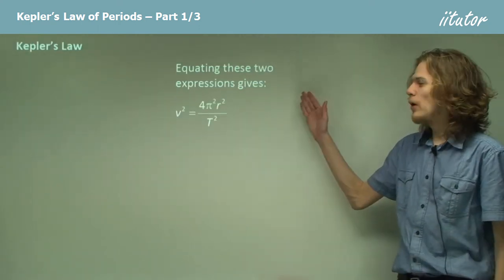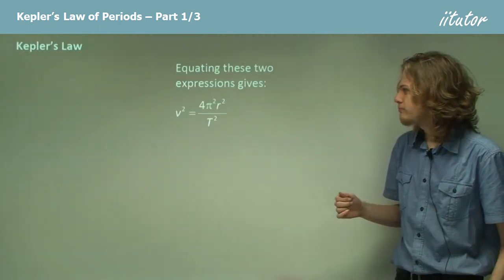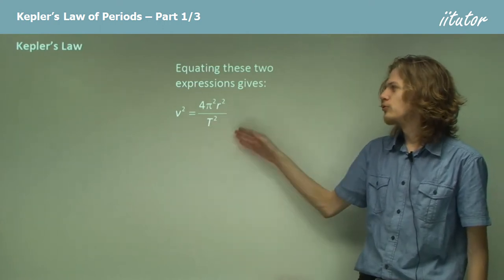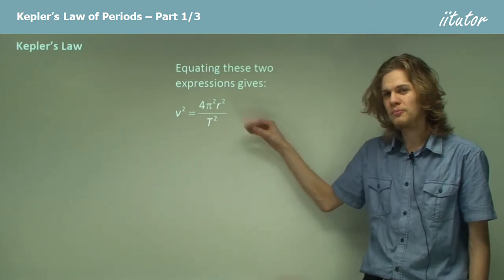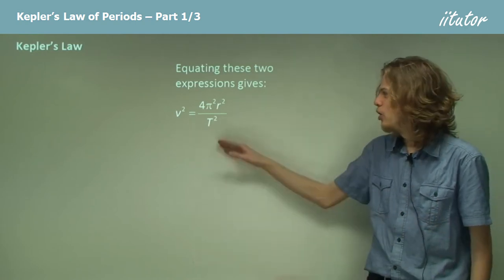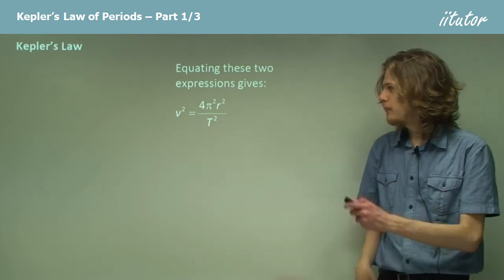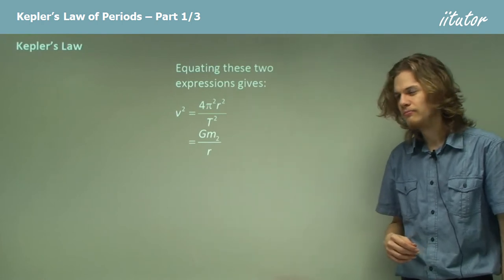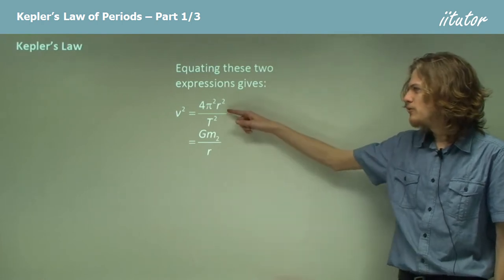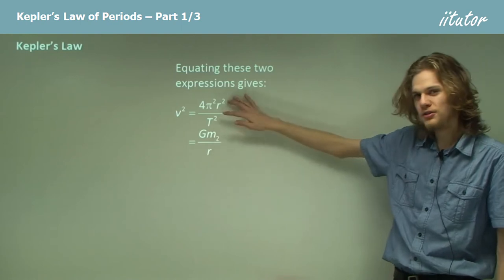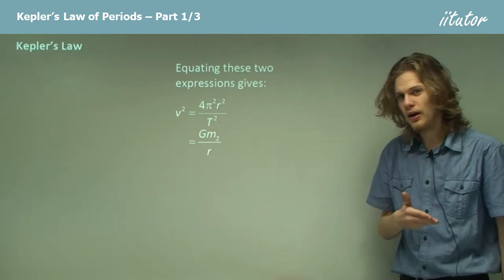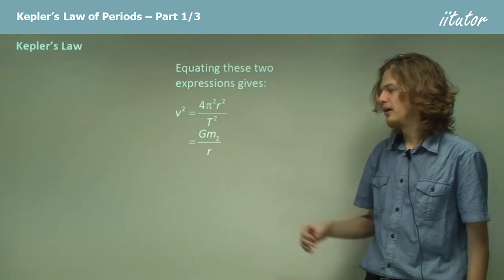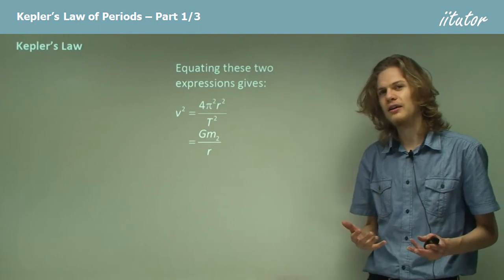So equating these two equations, we have v² equals 4π²r², that is circumference squared, over T², which will equal Gm over r. So now we've equated these two expressions: distance squared over time squared, and our gravitational acceleration.